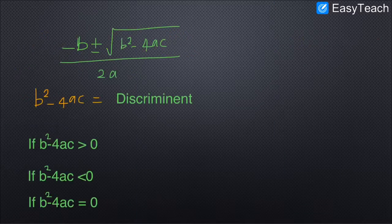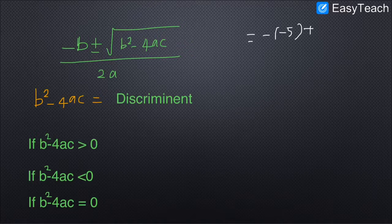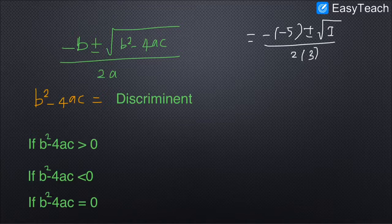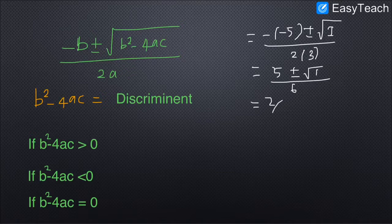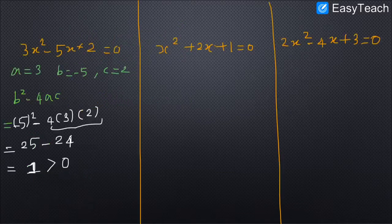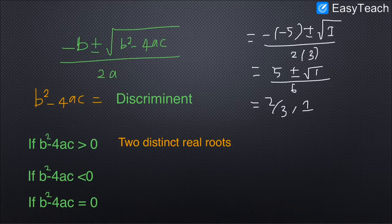Since b²-4ac is greater than 0, let us apply the values in the quadratic formula: x = (-(-5) ± √1) / (2×3) = (5 ± 1) / 6. The solutions are 2/3 and 1. Both are real numbers, so if the discriminant is greater than 0, we get two distinct real roots.